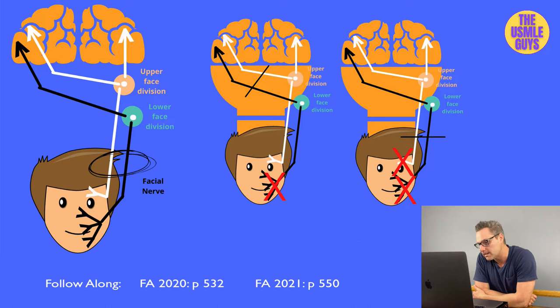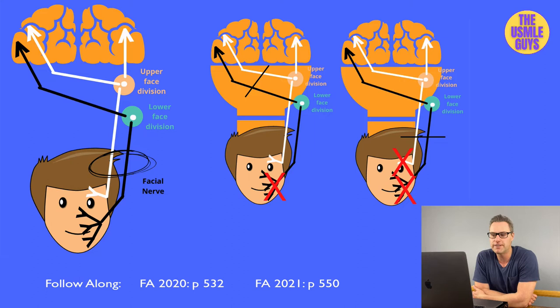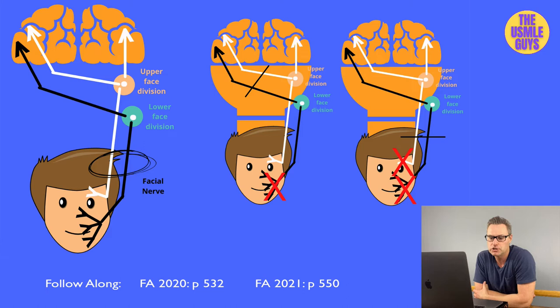If we injure the cortex, the upper face will be okay because innervation to the upper face is bilateral — this is what you'd expect in a stroke. However, if we injure the facial nerve itself, we'll see ipsilateral upper and lower face weakness, because the injury won't spare that ipsilateral innervation.